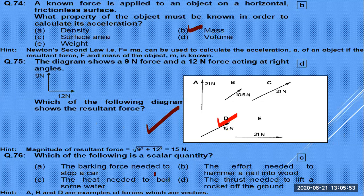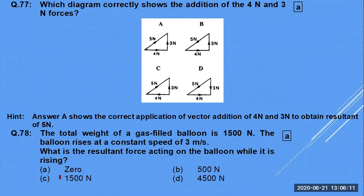Which is a scalar quantity: force needed to stop a car, force to hammer a nail, or heat needed to boil water? Heat needed to boil water is a scalar quantity. Which diagram correctly shows the addition of 4 N and 3 N forces? It is the one using the head-to-tail rule.